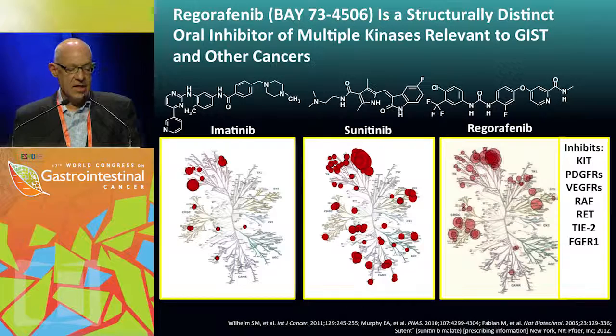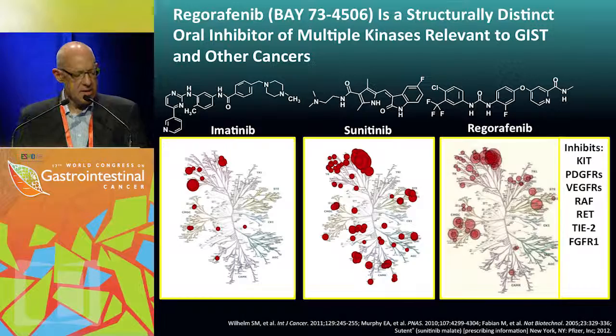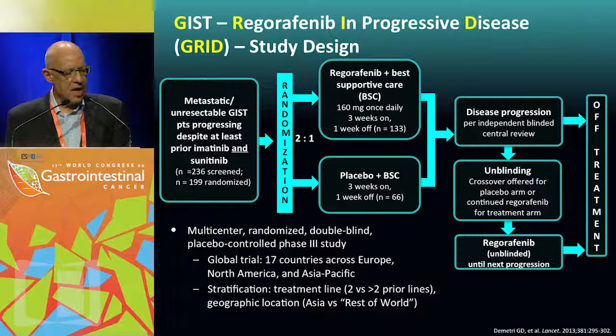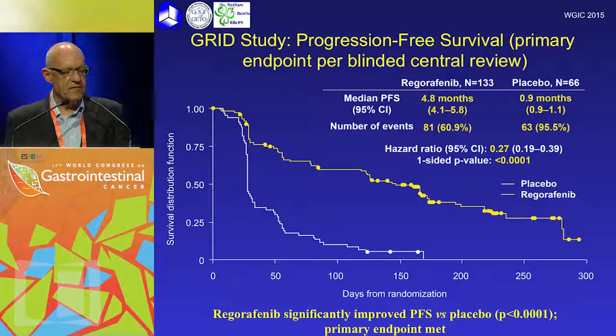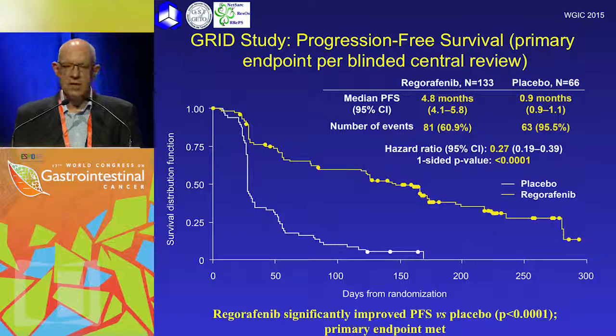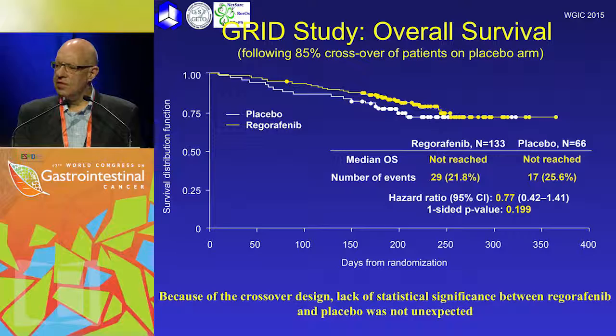One of the important drugs available in the last couple of years is regorafenib. The kinome map shows it's different to sunitinib and imatinib and inhibits a number of key targets in this disease. Following preclinical data and phase 2 data from Boston, a randomised phase 3 trial called the GRID study was commenced, randomising patients to regorafenib plus best supportive care versus placebo plus best supportive care, with crossover at progression. The results show a very significant difference in progression-free survival, with a hazard ratio of 0.27. Overall survival curves come together due to crossover to an effective drug.